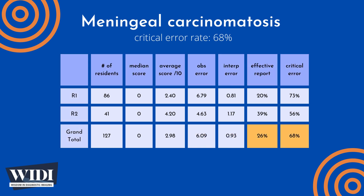We define an effective report to be one which achieves scores between 7 and 10 — in terms of letter grades, this would be an A or a B. In this most missed case, 26% of residents produced effective reports. We define a report having a critical error to be one with scores between 0 and 2 — in terms of letter grades, this would be an F or a D. In this most missed case, 68% of residents produced reports with critical errors.